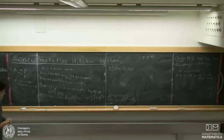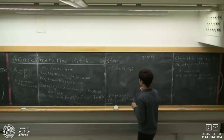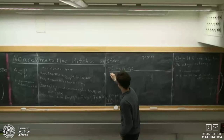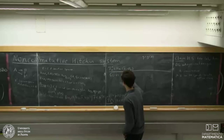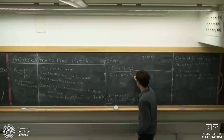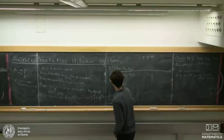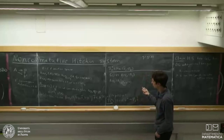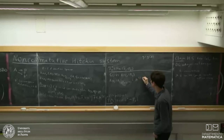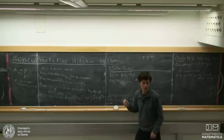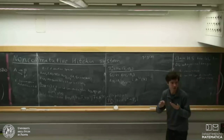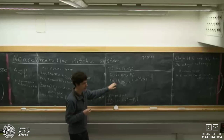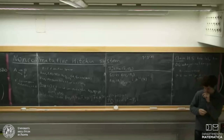GL(V) acts on the representation space, and taking the categorical quotient gives an open subset contained in the coarse moduli space of semi-stable vector bundles. Similarly, taking the GIT quotient on the stable locus gives the moduli space of stable bundles. So the usual moduli space is obtained by taking this quotient.